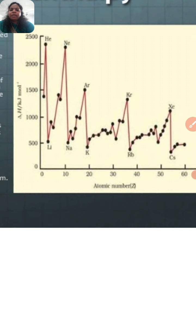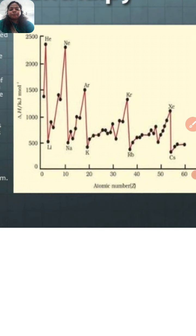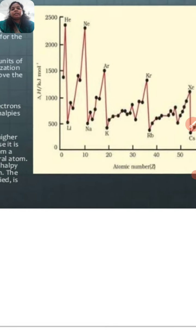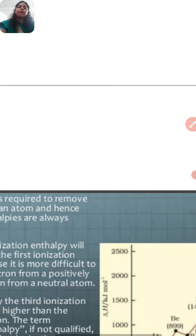Looking at a graph of atomic number versus ionization enthalpy, we can see elements like helium, neon, argon, krypton, and xenon. The ionization enthalpy of helium is greater than that of comparatively other elements because its outermost shell is completely filled. The nucleus has two electrons which are completely filled, so removing an electron requires much more energy. Therefore, the ionization enthalpy of helium is the greatest comparatively.